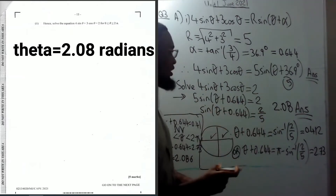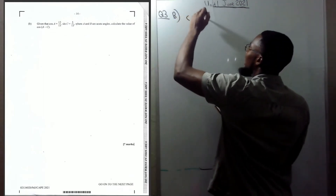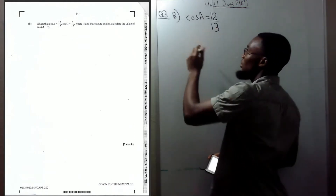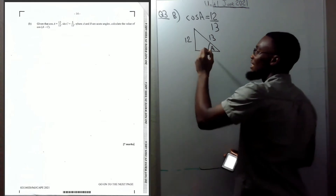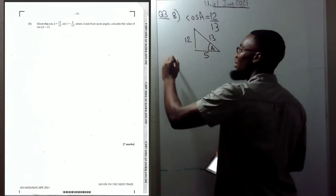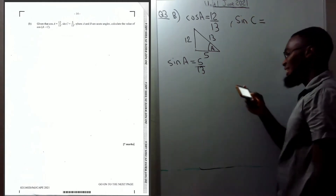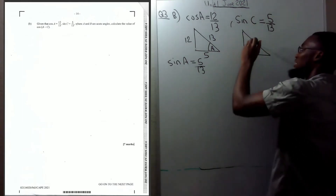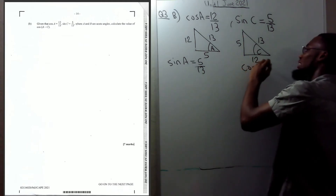Part B: given cos(a) = 12/13, draw a right triangle — opposite 5, adjacent 12, hypotenuse 13, a 5-12-13 triangle. So sin(a) = 5/13. They also give sin(c) = 5/13, so drawing that triangle: opposite 5, hypotenuse 13, adjacent 12, meaning cos(c) = 12/13.